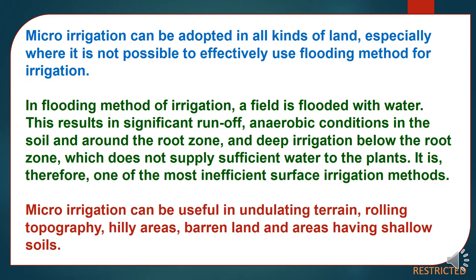Micro-Irrigation can be adopted for all kinds of plants, especially where it is not possible to effectively use the flooding method for irrigation. In the flooding method of irrigation, a field is flooded with water. This results in significant runoff, anaerobic conditions in the soil and around the root zone, and deep irrigation below the root zone which doesn't supply sufficient water to the plants — making it one of the most inefficient surface irrigation methods. Micro-Irrigation can be useful in undulating terrain, rolling topography, hilly areas, barren lands, and areas having shallow soils.